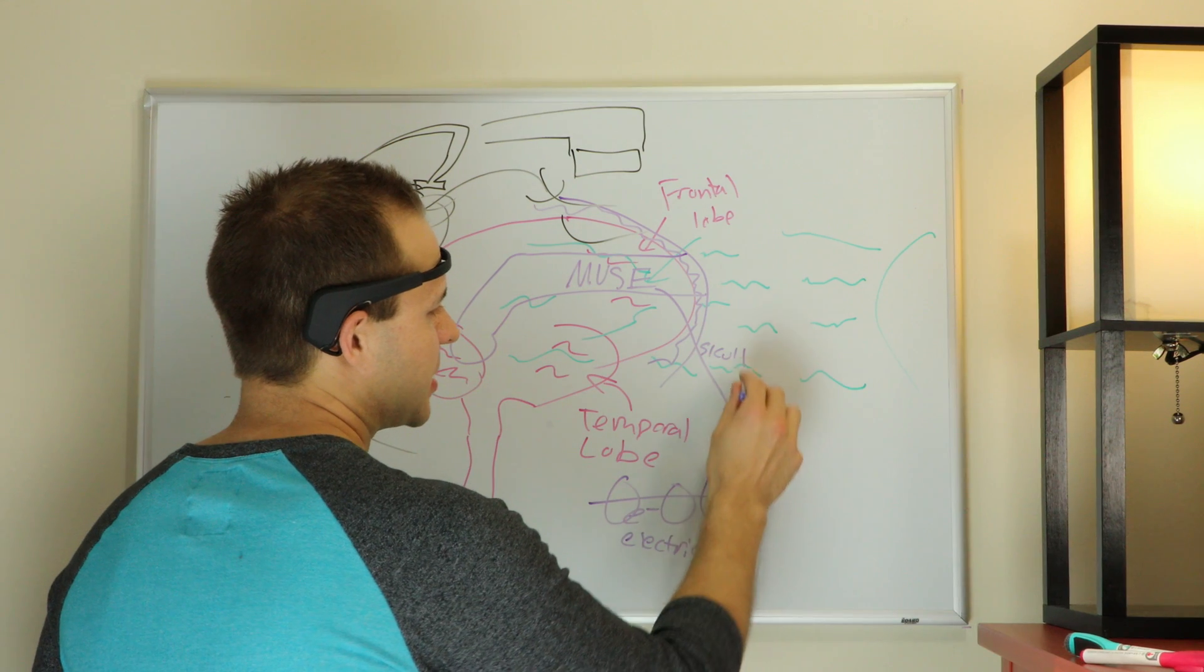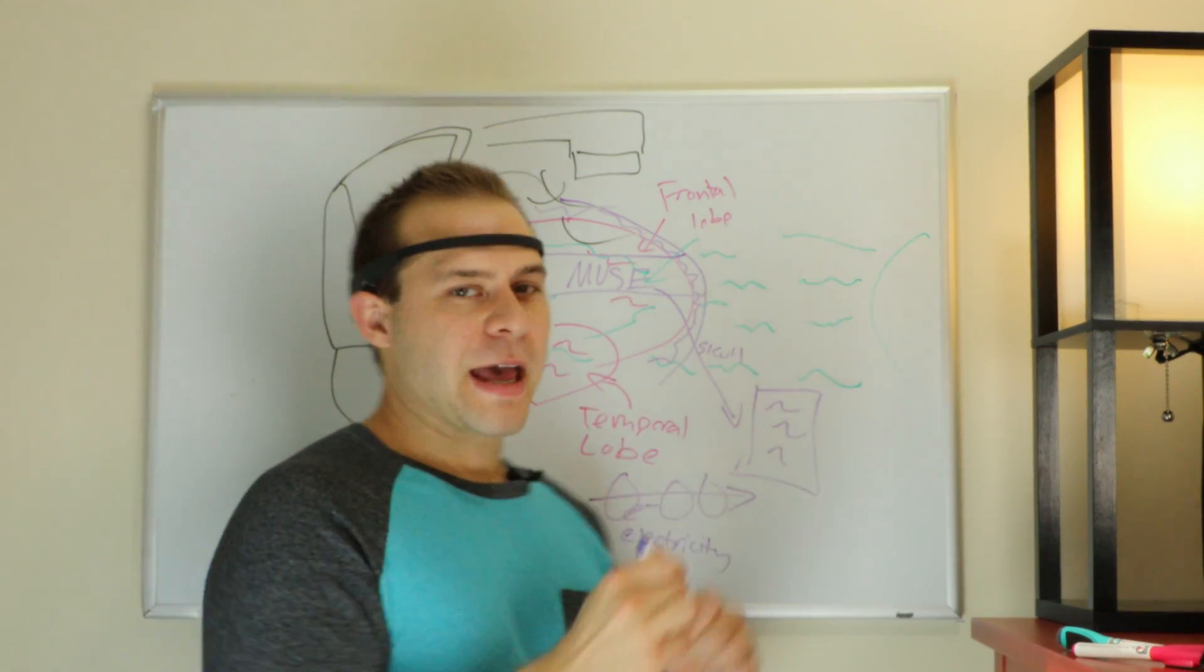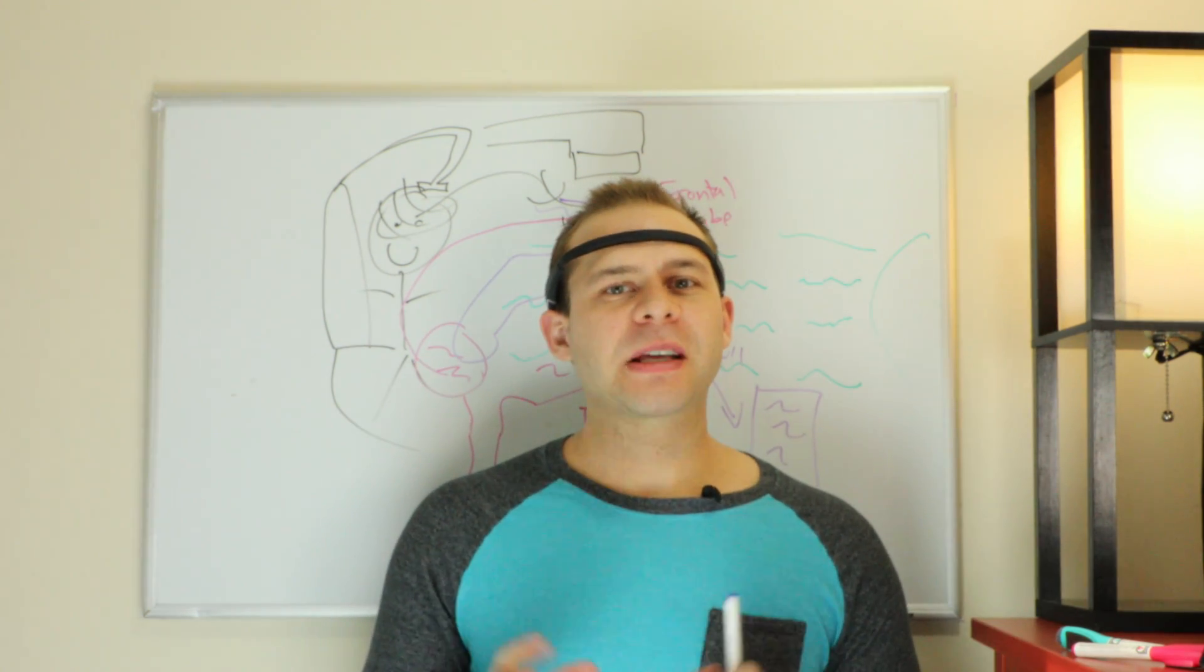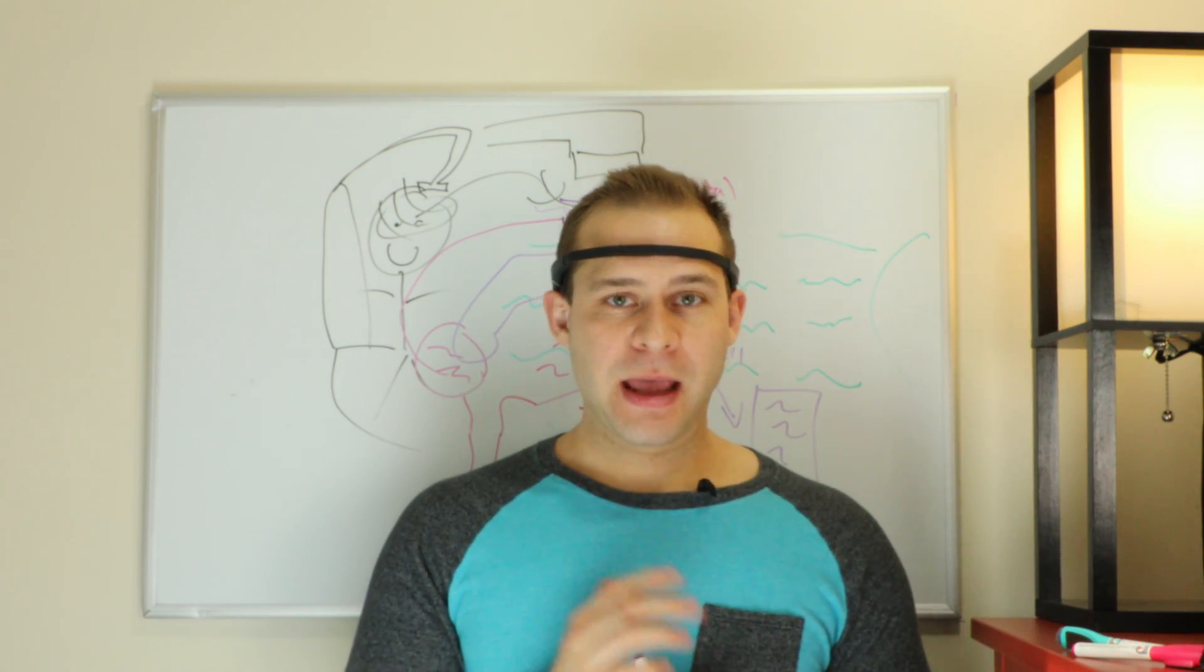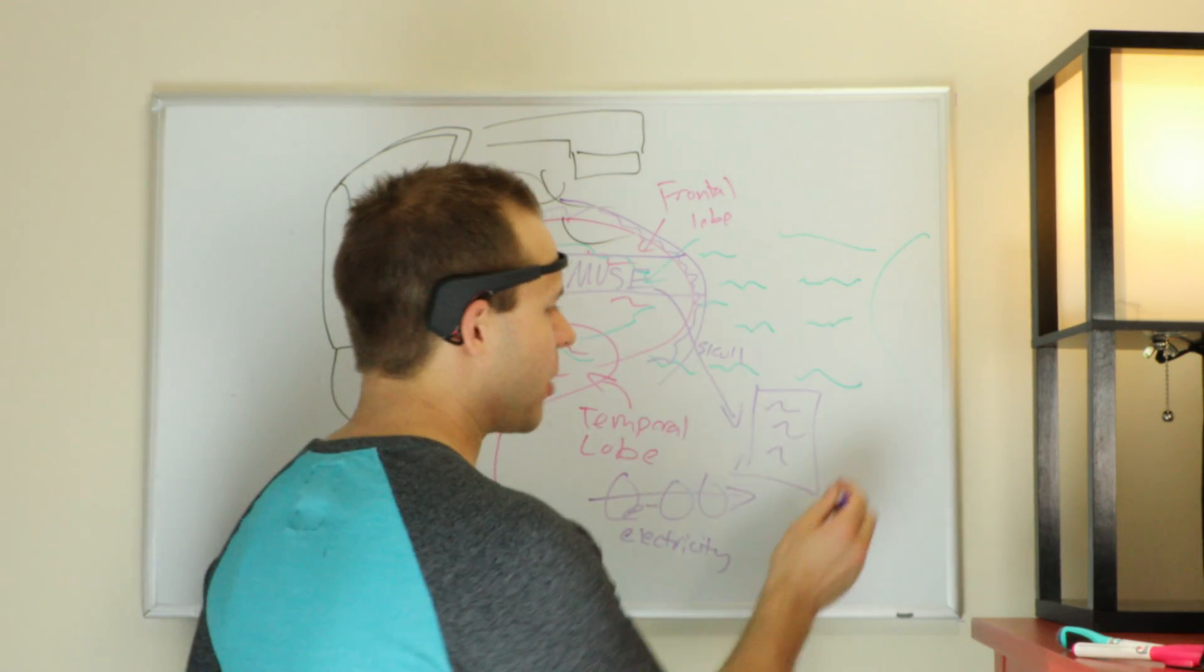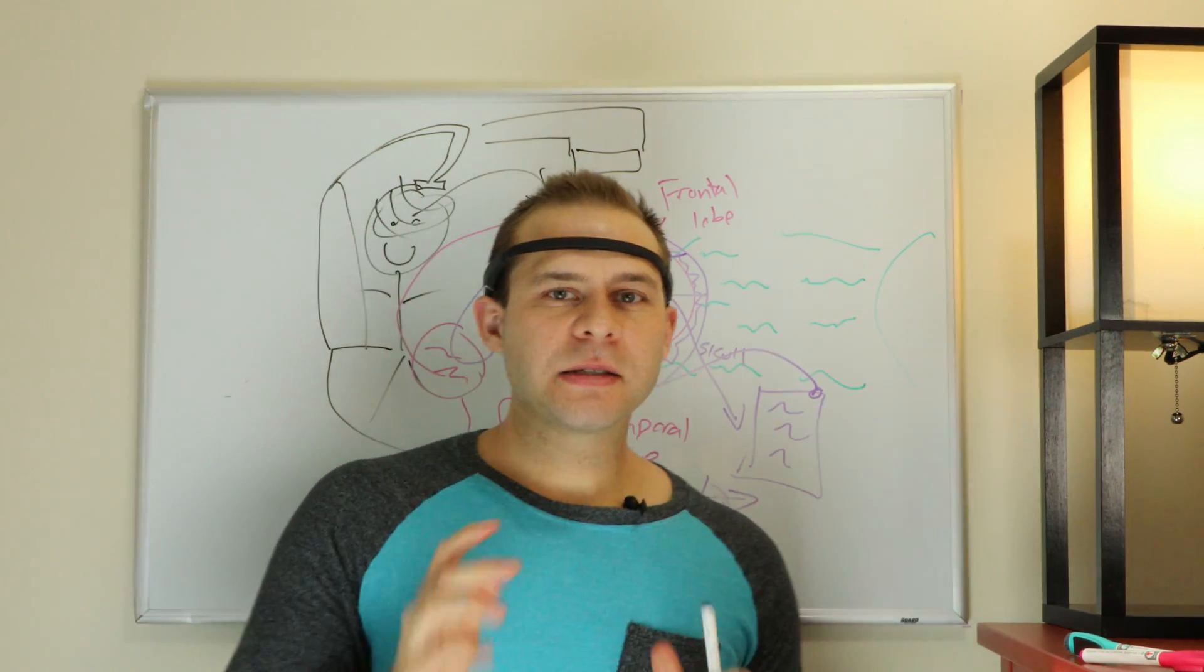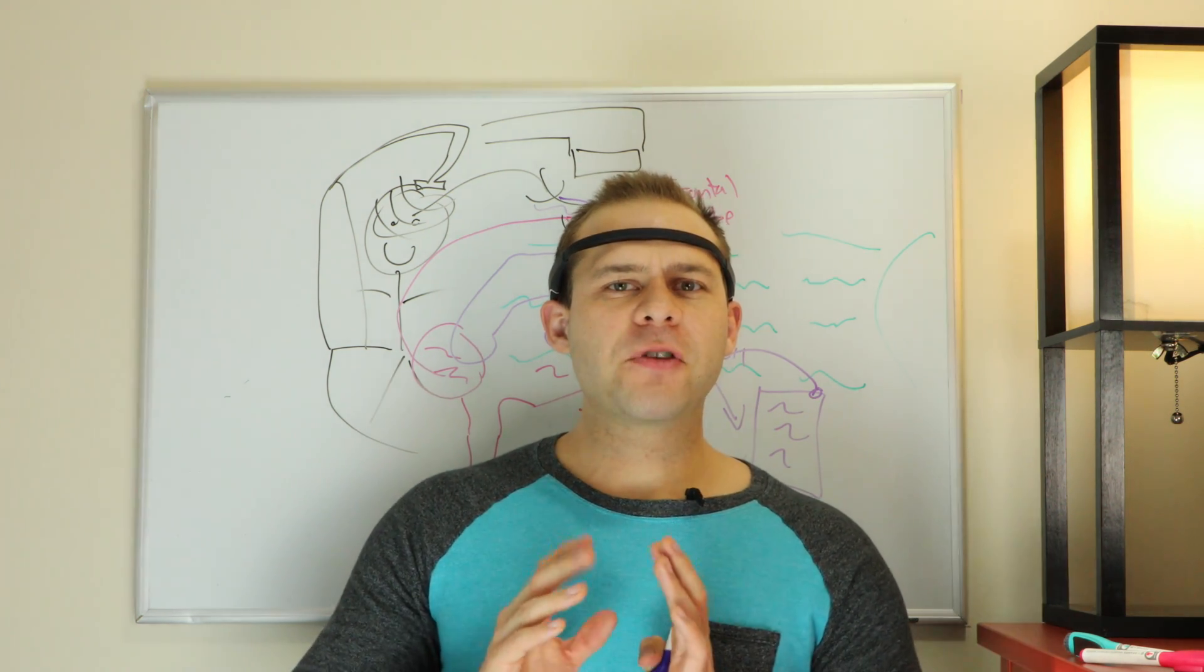And what it's doing is sending a signal to your smartphone that's analyzing the brain rhythms. When it analyzes the brain rhythms, it can tell whether you're in a relaxed focus state, or if your mind is wandering. And what it does is through headphones, these earbuds, tells you whether you're in the right spot or not.